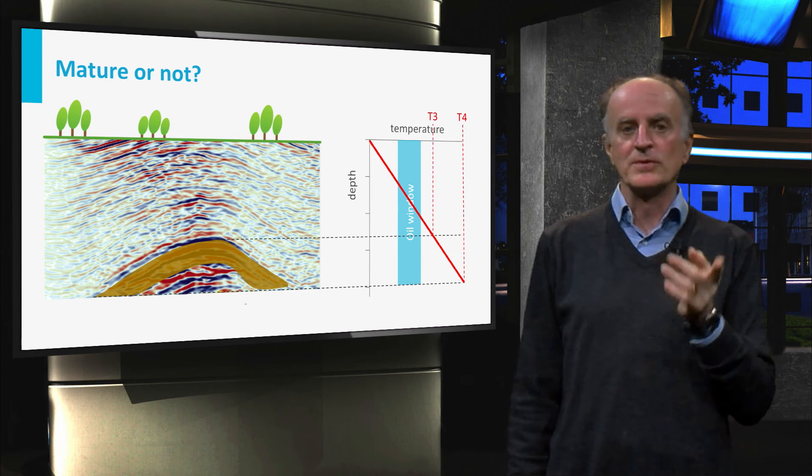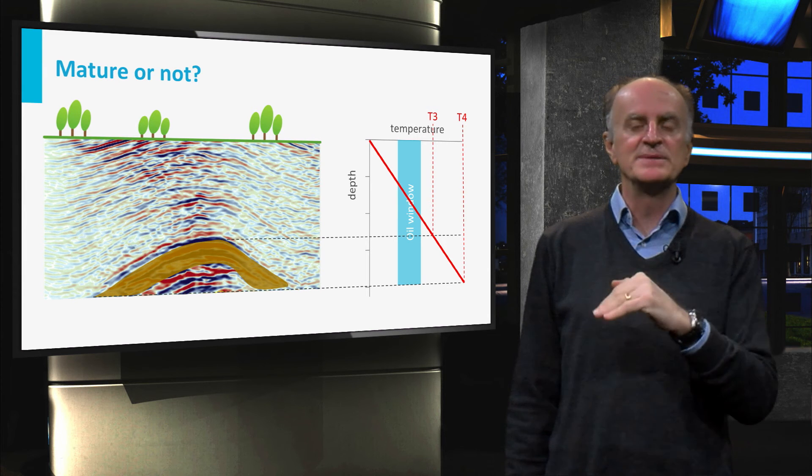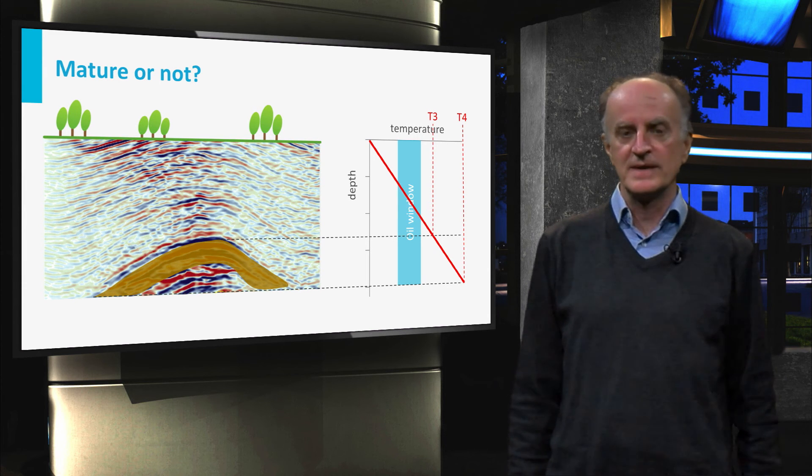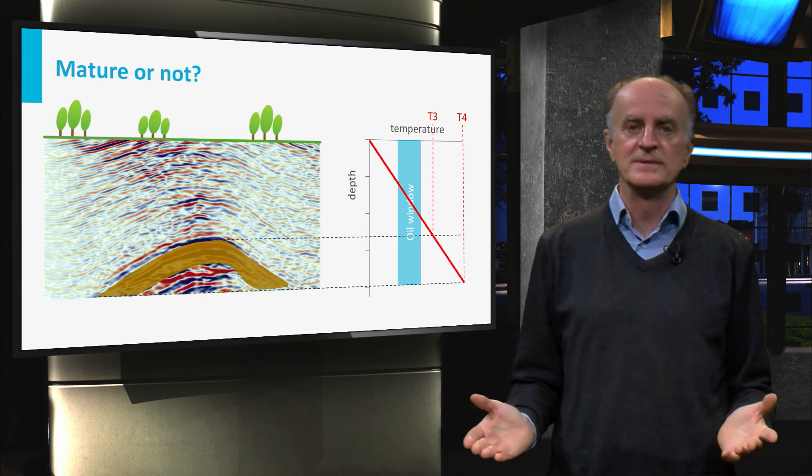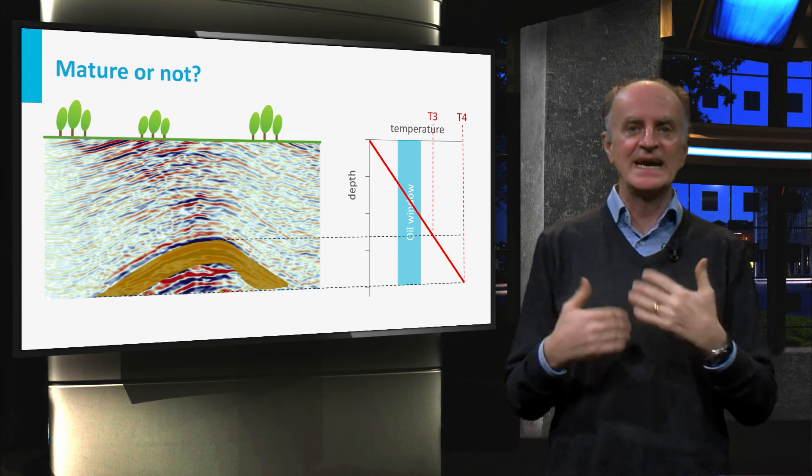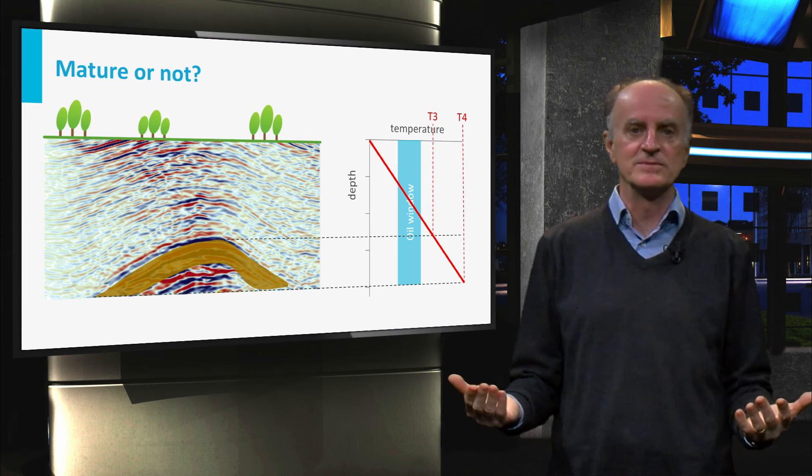If temperatures follow the red line, the temperature of the sediment will be between T3 and T4 and the rock will be over-mature. Too late, the rock has subsided beneath the oil window and no more oil is being produced.